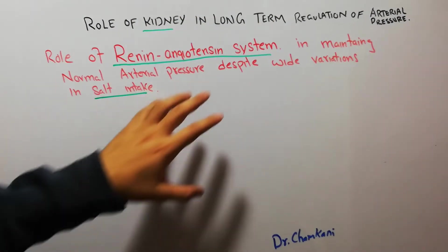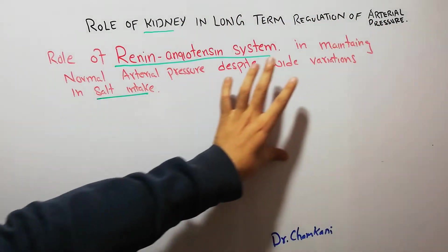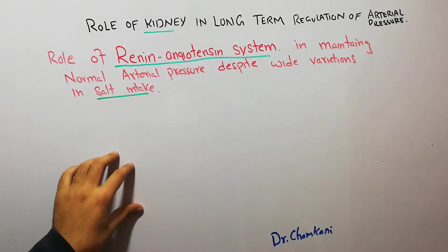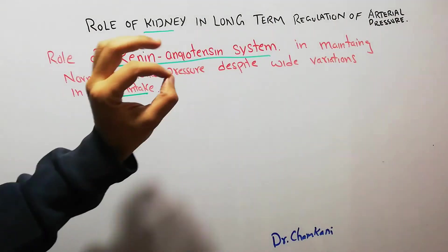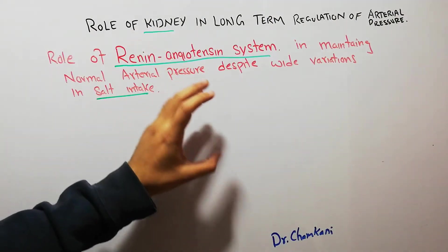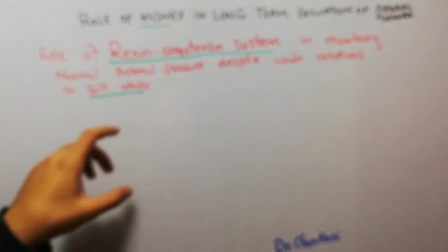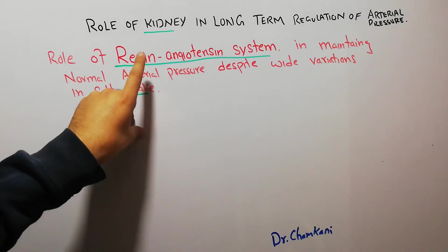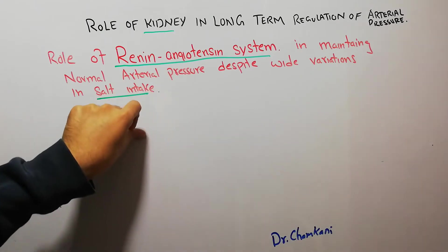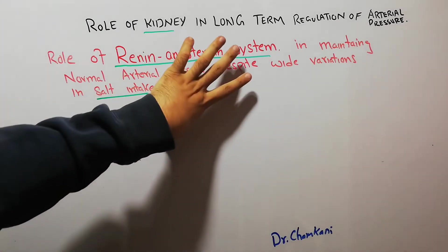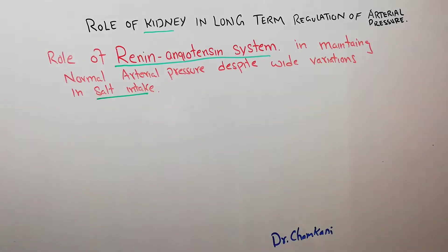One method used by the kidney to regulate arterial pressure is the fluid volume mechanism — the kidney maintains arterial pressure through maintenance of fluid volume in the body. A second mechanism used by the kidney is the renin angiotensin system, which helps in the regulation of arterial pressure.